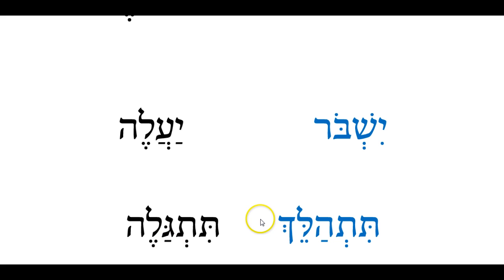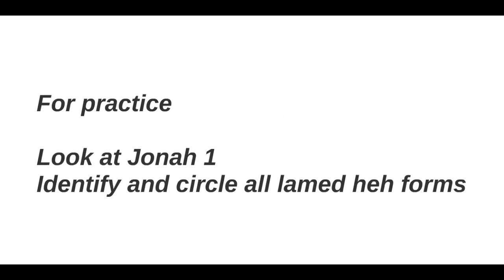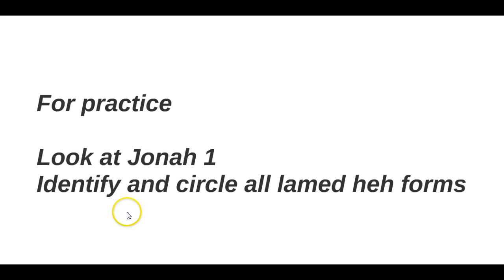I recommend you look at these rules again and make a list of them in your notes to help you identify this particular type of verb. As an exercise, go to Jonah chapter one, look at each of the words, and from the rules you've written down, try to identify and circle all of the lamed hay forms you can see there. With that said, we'll call it quits for now, and I'll see you back in class to do some exercises on this in the weeks to come.